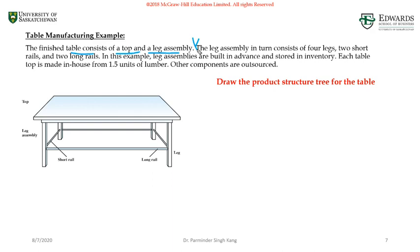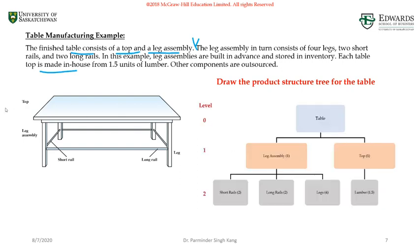On the other hand, the tabletop is made up of 1.5 units of lumber. Once you compile this information, I would like you to give it a go. You're going to end up with this type of product structure tree.